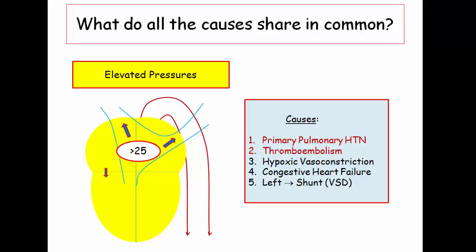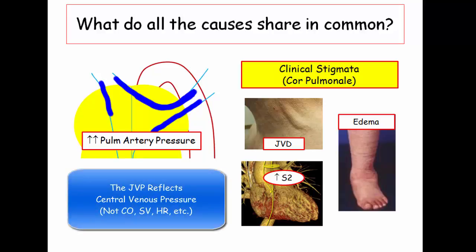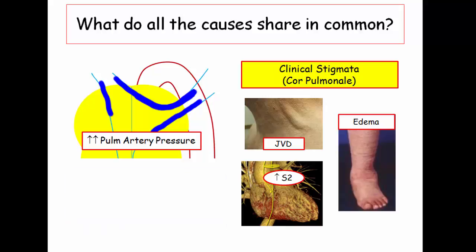From the perspective of the NBME, the principal derivatives relate to primary pulmonary hypertension and thromboembolic disease. Insofar as clinical stigmata, elevated right-sided pressures are associated with elevation of the jugular venous central pressure—a measure of central venous pressure, which they ask about. Peripheral edema is present in these patients on a hydrostatic basis, and the NBME also favors these types of questions.